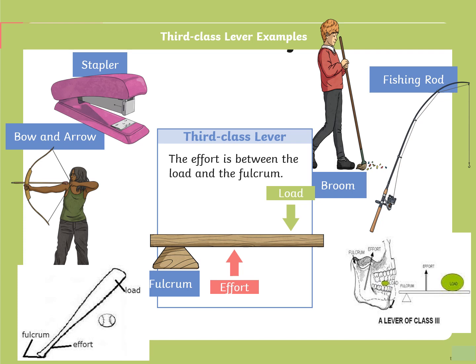In a broom, the load is at the bottom, the effort is the human hand which is in between, and the fulcrum is the end of the stick. Similarly, in a fishing rod, the fulcrum is at the end, the load is where the fish is caught, and the effort is in the center where the line is wound up.